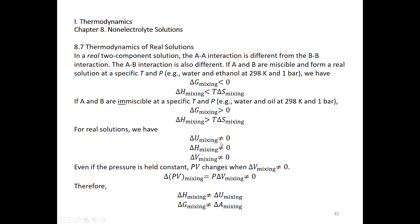For real solutions, delta U mixing is different from zero — again, because the AB interaction, AA interaction, and BB interaction are all different from each other. Therefore, upon mixing, the internal energy of the system will change. And very likely, delta H mixing is non-zero and delta V mixing is also non-zero. Even if pressure is held constant, PV can change because V can change. Delta V mixing is often non-zero, and even if it is zero for a real solution, that's usually by coincidence. Typically, delta PV mixing is non-zero, so delta H mixing is slightly different from delta U mixing, and delta G mixing is slightly different from delta A mixing.